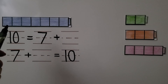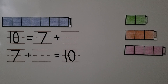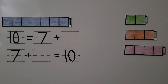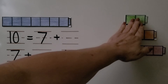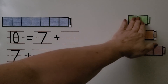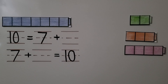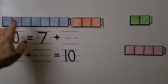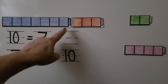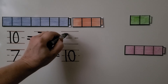Here we have a cube train with one, two, three, four, five, six, seven cubes. Which cube train can we add to make a train with ten cubes? If we add the two green ones we'll have seven, eight, nine — that's not enough, we need ten. If we add the three orange ones we'll have seven, eight, nine, ten — yes, that's enough! Seven plus three equals ten. We can write the number three.